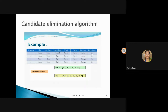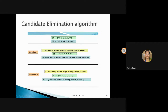We use the question mark notation and generalize — we change it if there is a change in the attribute value. As you can see, the second tuple's humidity value is changed while the rest remain the same: normal and high. There is a change, so we replace that with a question mark in the third attribute for the specific hypothesis.